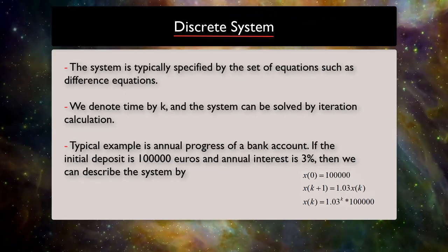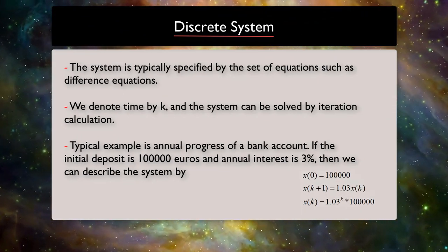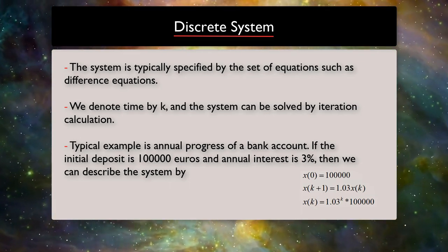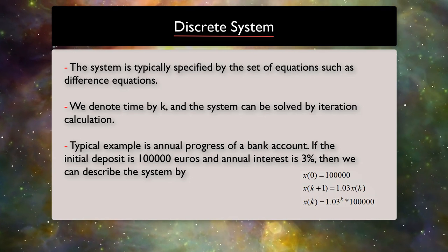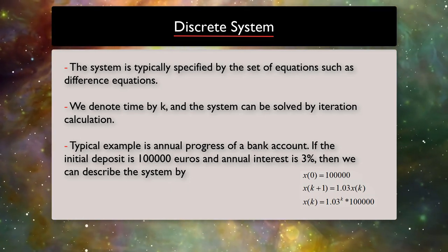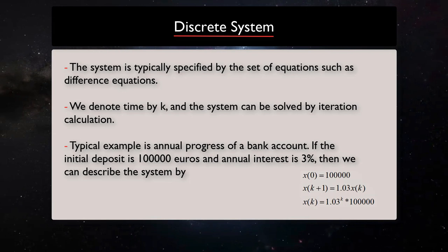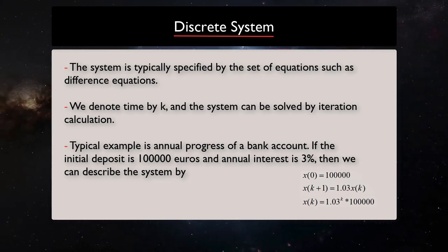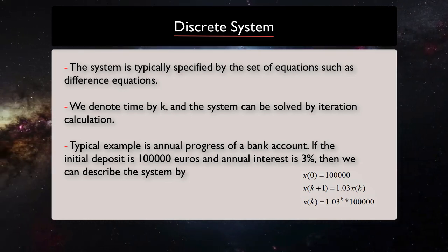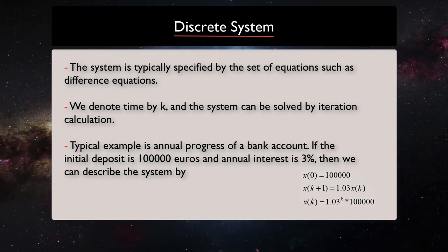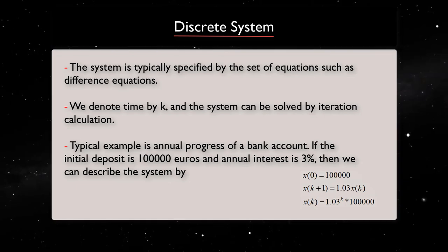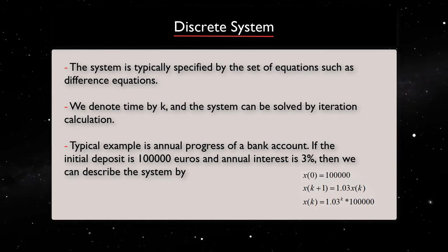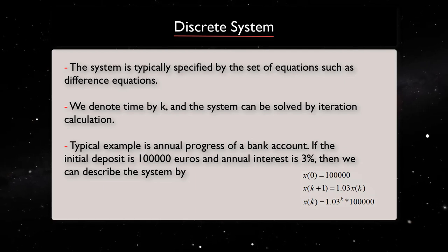Continuous systems are normally described by a set of differential equations, whereas discrete dynamical systems, which we often refer to as maps, are specified by difference equations. In discrete systems, we normally denote time by k or n, and then the system can be solved by iterative calculations called iterative maps. Iterative maps give us less information but are much simpler and better suited to dealing with very many entities, especially where feedback is important.